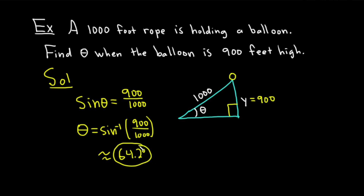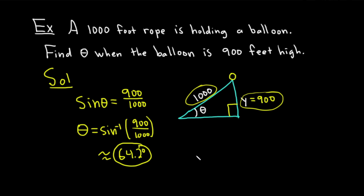Putting this in a calculator in degree mode, θ is approximately 64.2 degrees. Whenever you have these triangle problems, create a relationship with a trig function — here, opposite over hypotenuse led us to use sine, then the inverse sine to solve for θ. Hopefully you've learned some math in this video. Make sure to check out more videos on Chegg. Until next time, good luck.